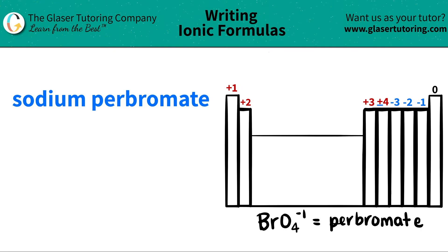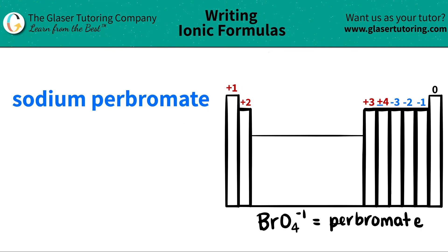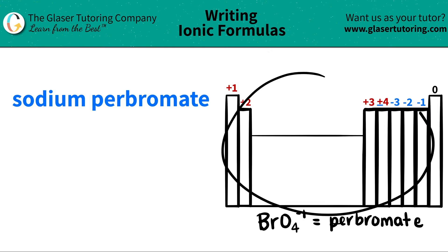Today we are going to be writing the formula for the ionic compound sodium perbromate. So let's work from left to right. The first thing I have is sodium. I'm going to scan the periodic table to find where sodium is.